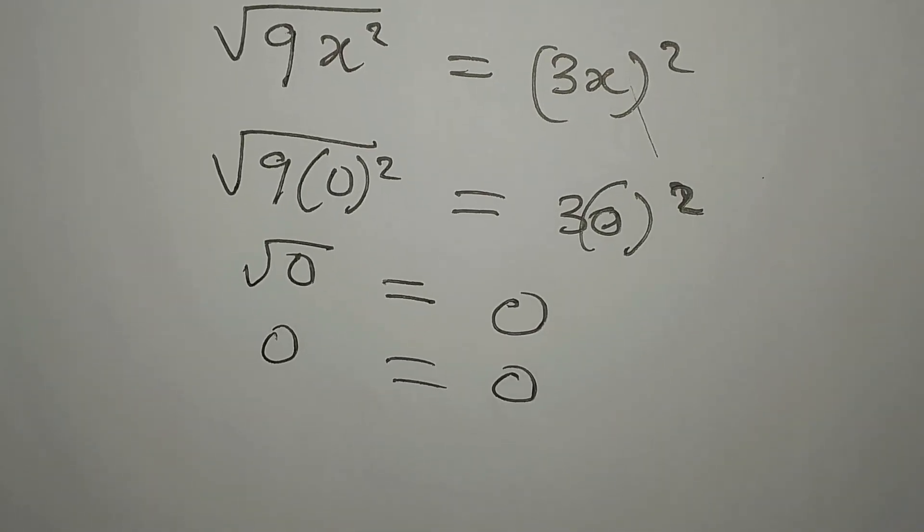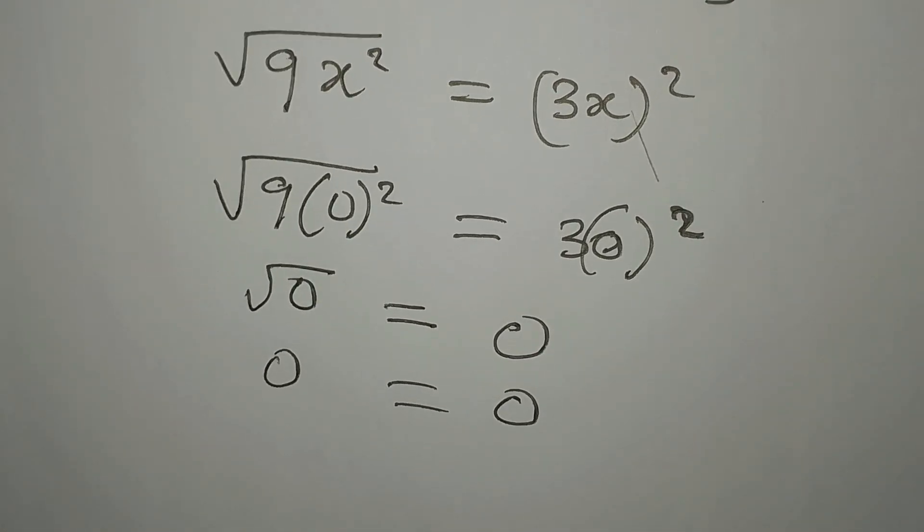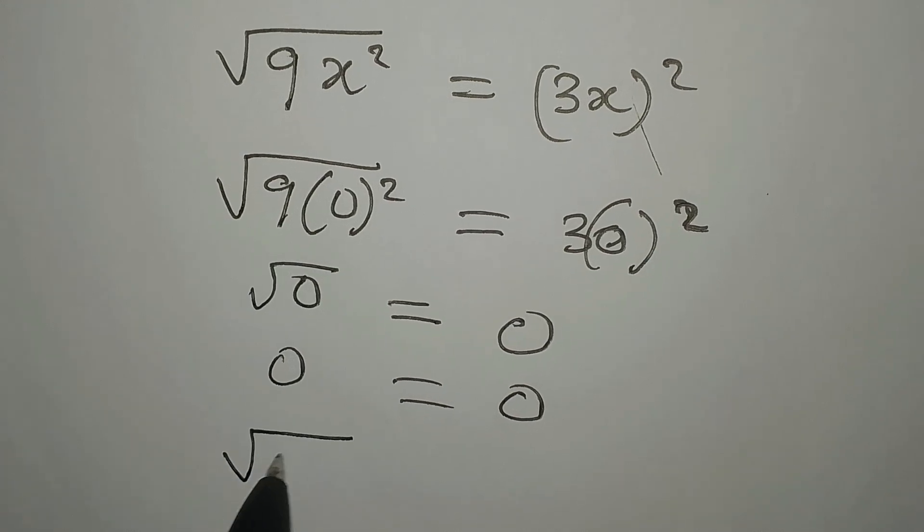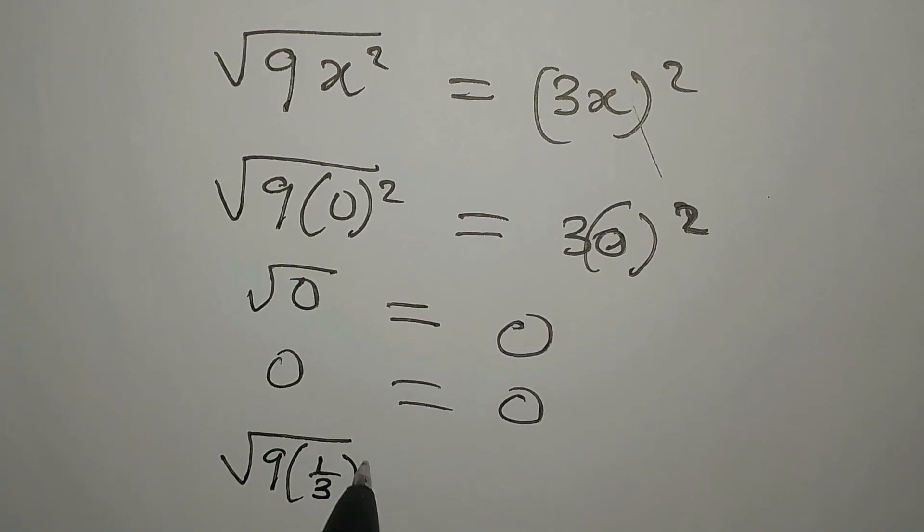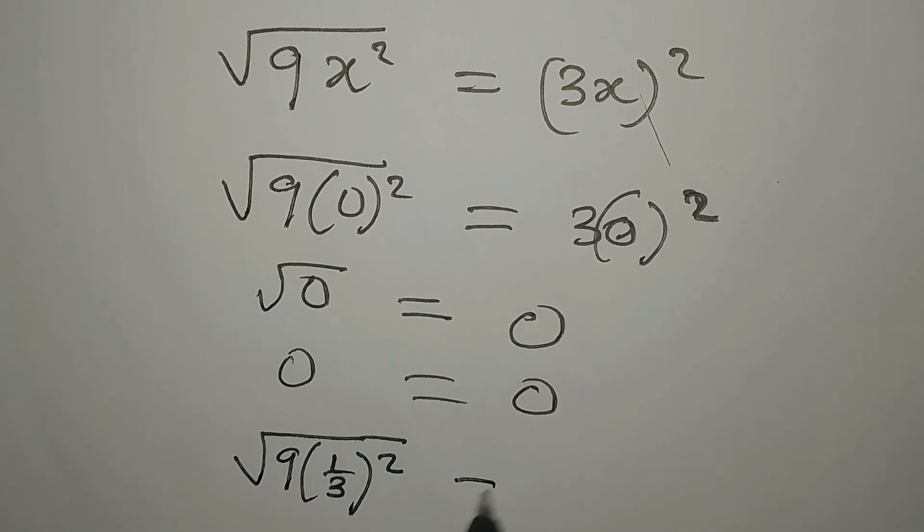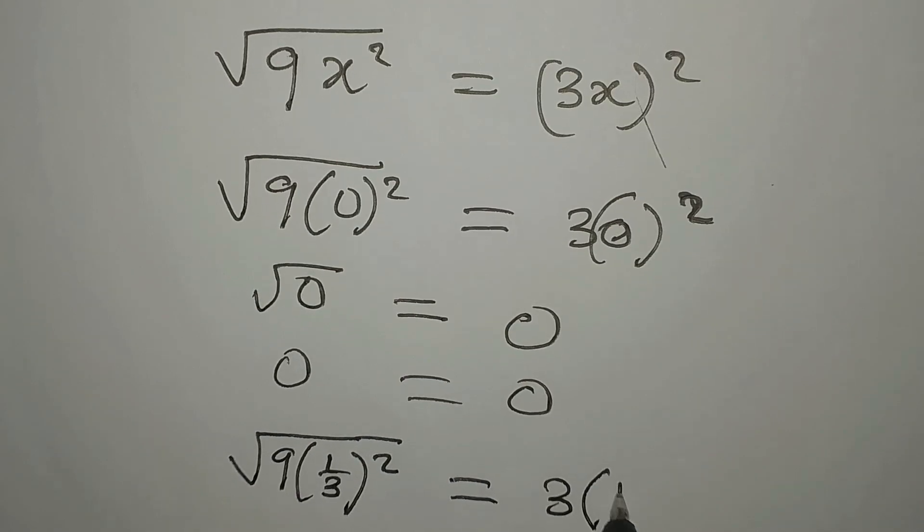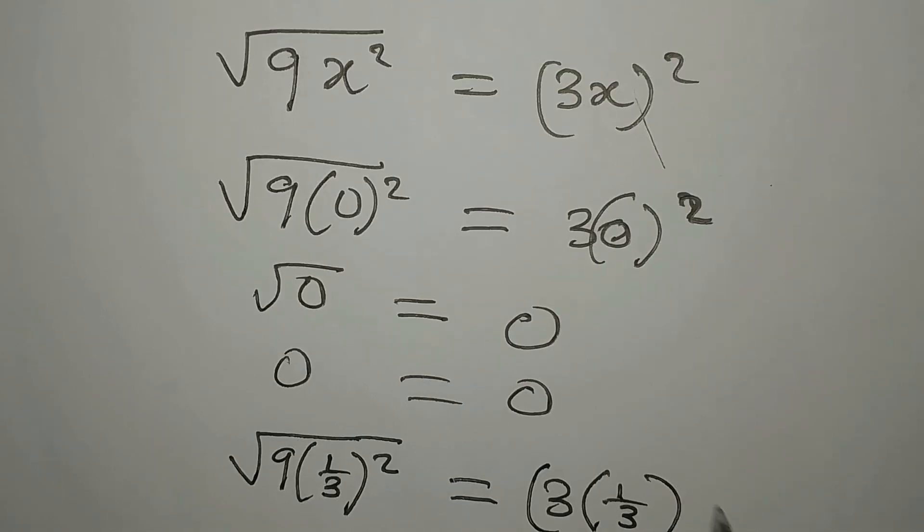Now let's work with x equal to 1 over 3. That means we're having square root of 9 into 1 over 3 to the power of 2 equal to 3 into 1 over 3 to the power of 2.